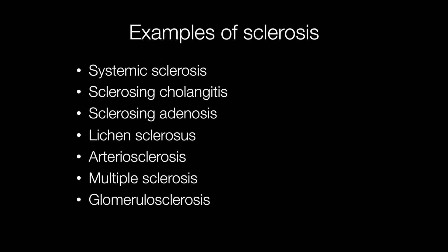A few examples of sclerosis include systemic sclerosis, sclerosing cholangitis, sclerosing adenosis (a condition that occurs in the breast and prostate), lichen sclerosis, arteriosclerosis, multiple sclerosis, and glomerulosclerosis. This is just a fraction of diseases or conditions characterized by sclerosis.